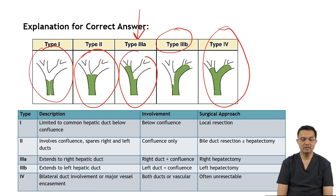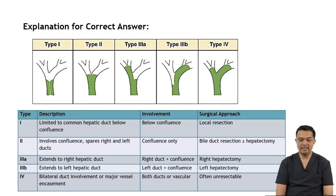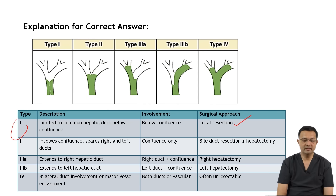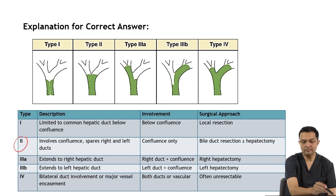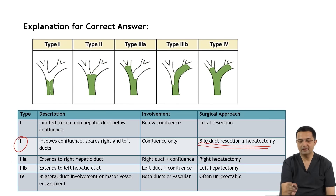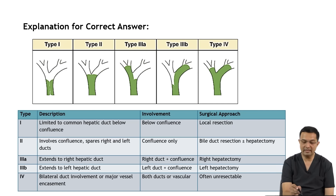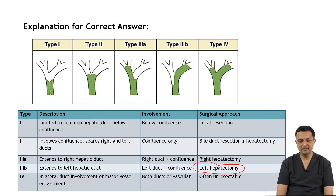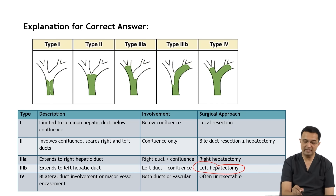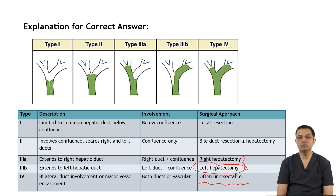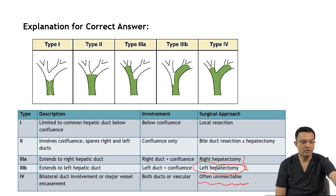Regarding surgical approaches: for type 1, you can do local resection. For type 2, surgery involves bile duct resection with or without hepatectomy. For type 3a, it is generally right hepatectomy with caudate lobe resection. For type 3b, it is left hepatectomy with caudate lobe resection. For type 4, it is generally unresectable. When performing left or right hepatectomy, bile duct resection and lymphadenectomy are also required.